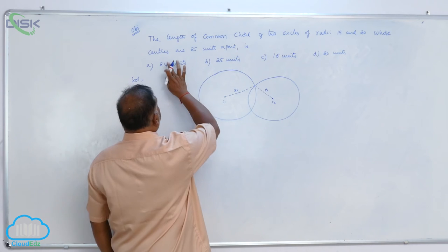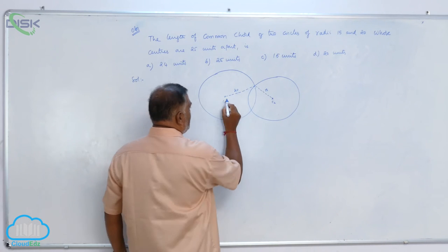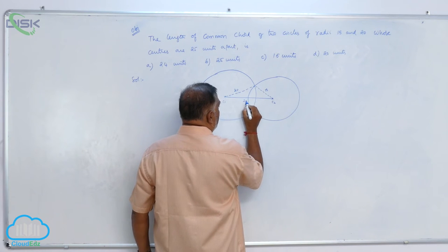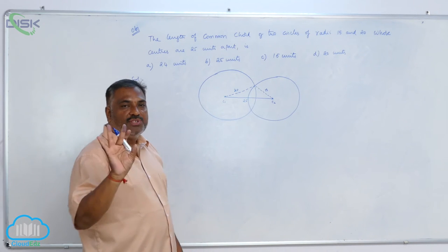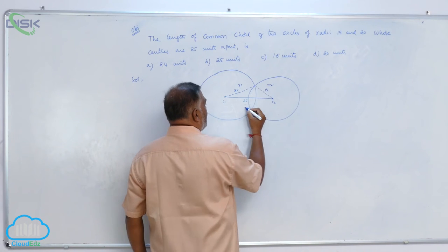He says that centers are 25 units apart. That means distance between them is 25 units. Now observe one logic. This is R1, this is R2, this is D.